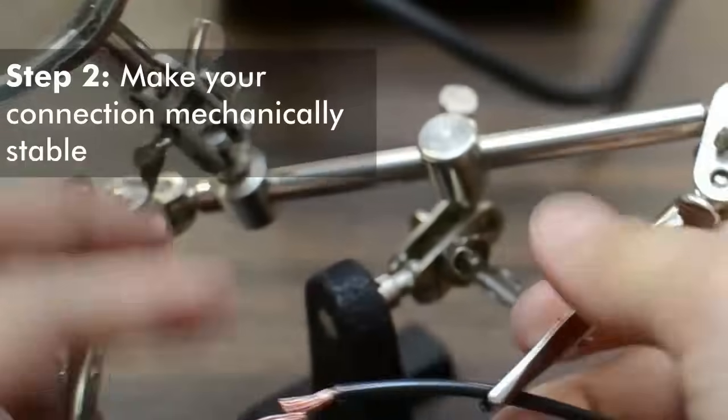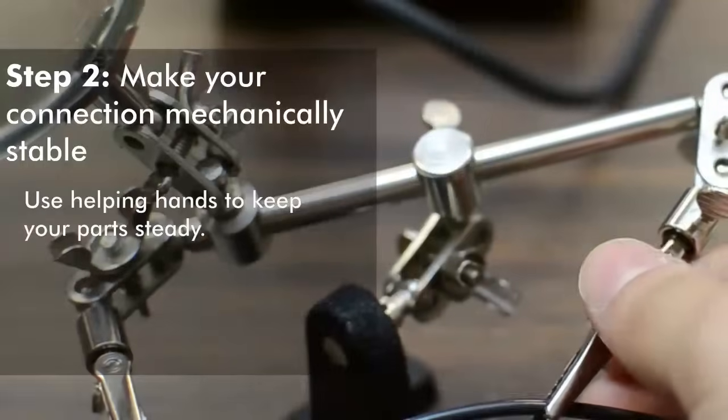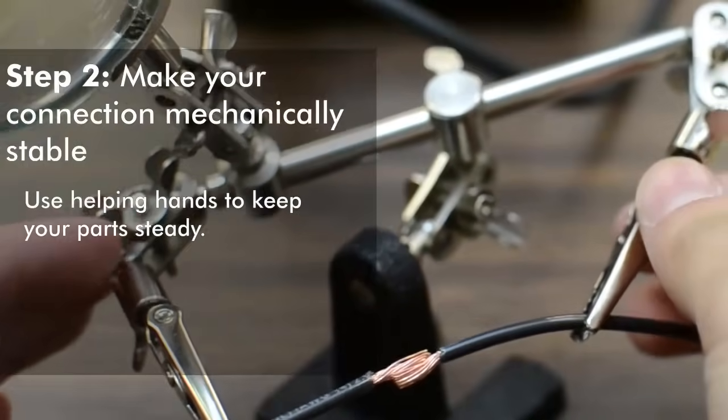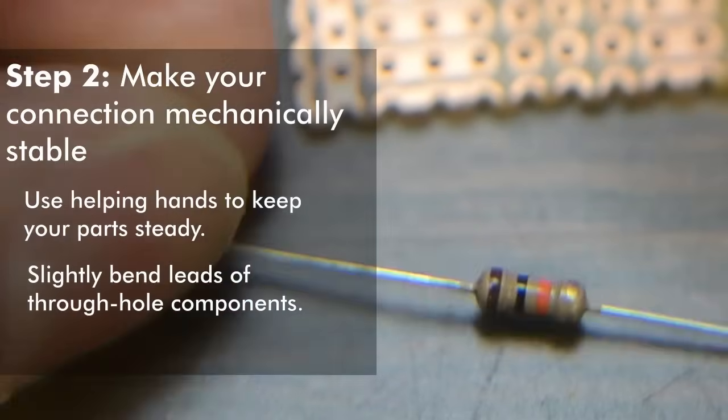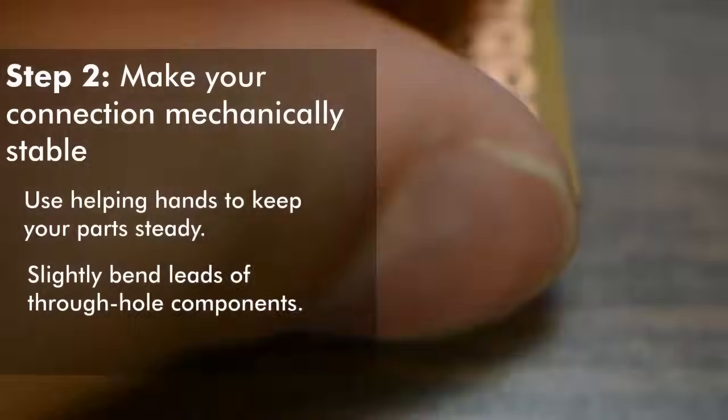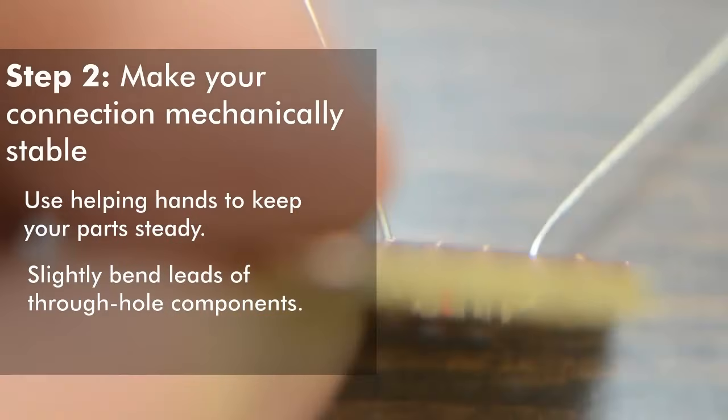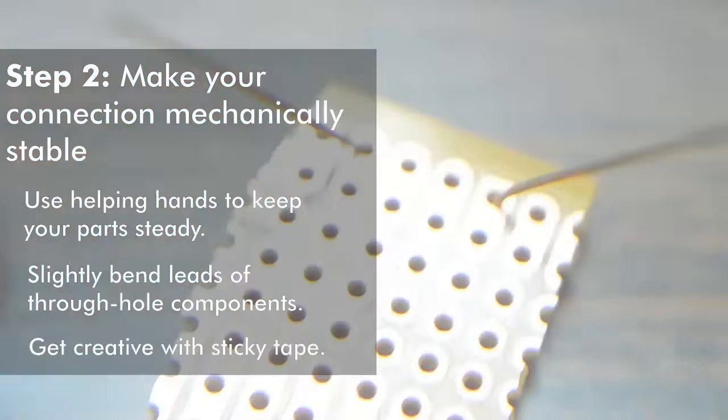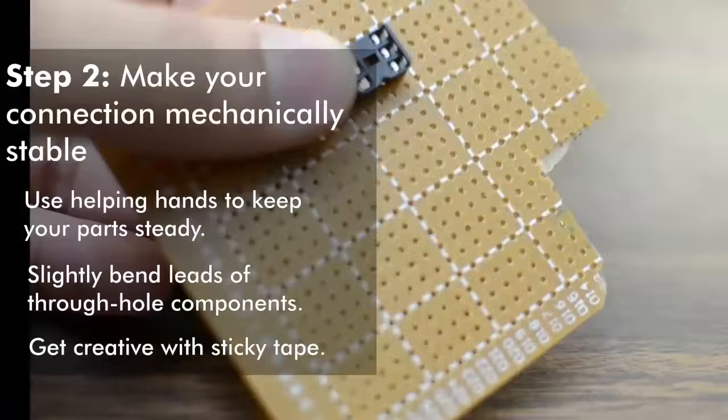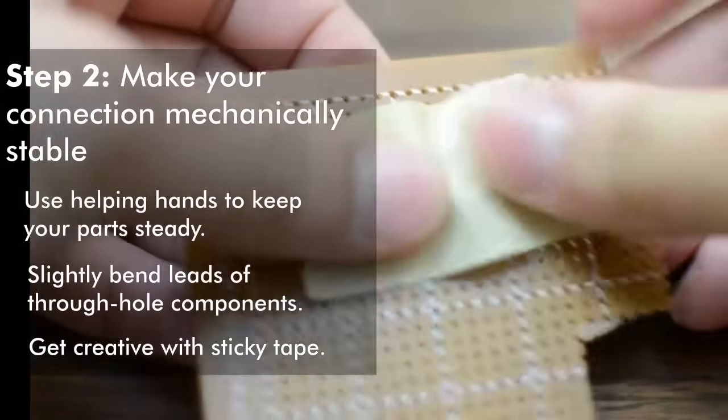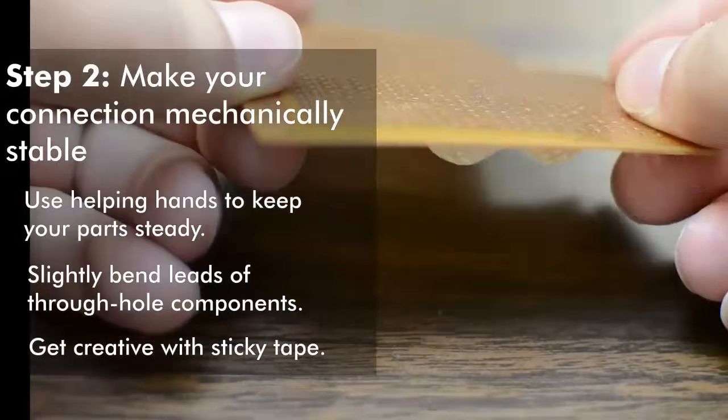Next, make your components stay in place without your help. This is where you can use your helping hands. If you're soldering a through-hole component in a circuit board, you can bend the leads of the component into a V-shape so that it stays in place flush against the board. For components without long leads, you can use a piece of tape to hold them in place. There are any number of ways to keep your components steady, so feel free to get creative.